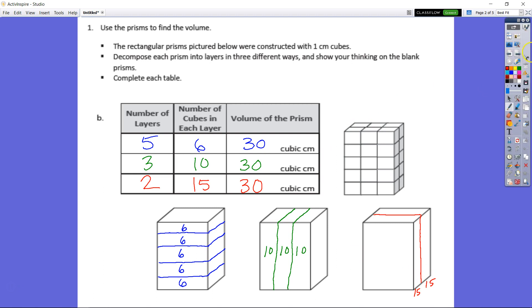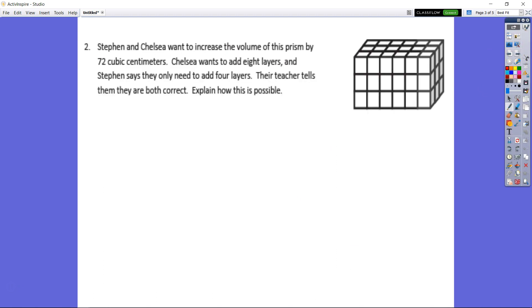Let's move on to number two here. Looking at number two. Stephen and Chelsea want to increase the volume of this prism by 72 cubic centimeters. Chelsea wants to add eight layers. And Stephen says we only need to add four layers. Their teacher tells them they're both correct. Explain how this is possible. So remember, if we are adding, we know that we're going to look at, are we adding the layers to the top or are we adding layers to the side?